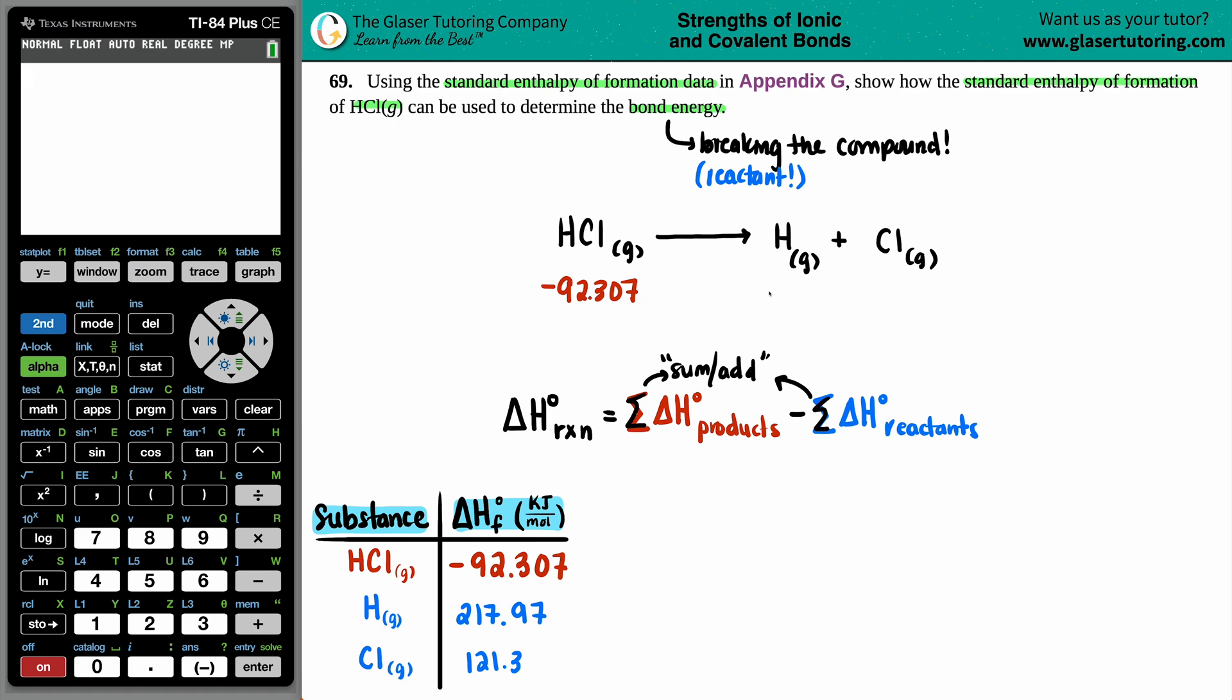So H is 217.97 and 121.3, and then this one will be in blue, negative 92.307.